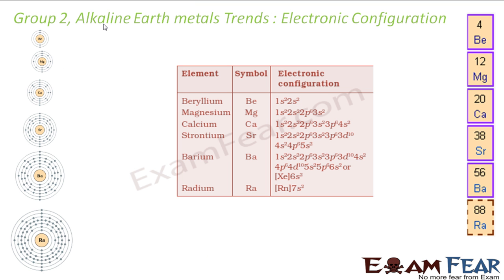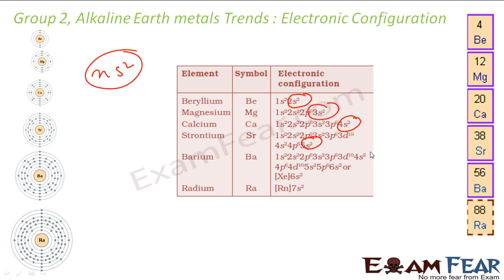Let us start with the electronic configuration. The electronic configuration is NS2. All of these — beryllium, magnesium, calcium, strontium, barium, radium — all have NS2 electronic configurations. So if you take any of these, the outermost shell will have two electrons.